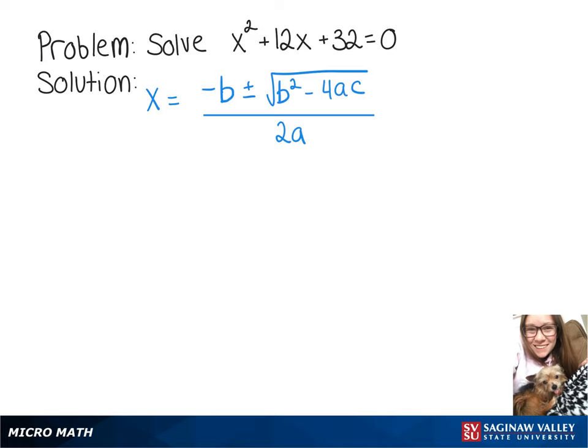We want to solve x² + 12x + 32 = 0, and we're going to do that using the quadratic formula.